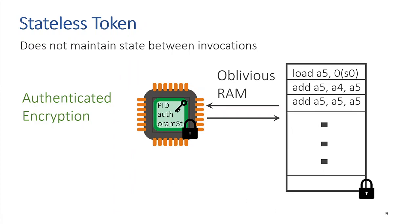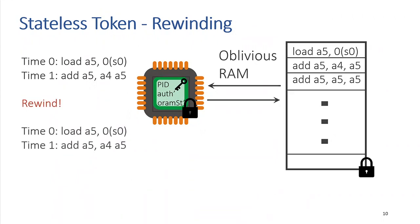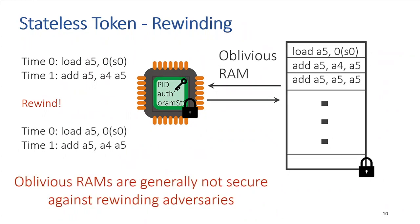The problem is that the adversary may not send back the most recent state — they may try to rewind execution. For example, at time zero a load operation executes, at time one an add operation, and then the adversary rewinds and runs the same instructions again. Ideally the adversary should learn nothing, but in practice they would learn something, because oblivious RAMs are generally not secure against rewinding adversaries.